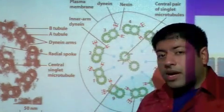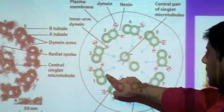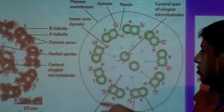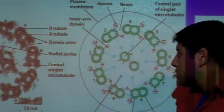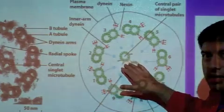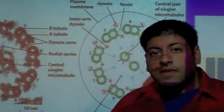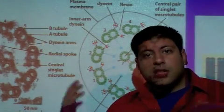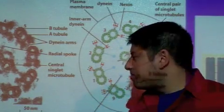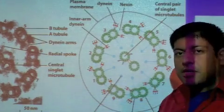Separating the doublets from the central singlets, we have a protein in light blue called the radial spoke. The radial spoke is coming from the doublet to the singlet, so there's space right there. It's a radial spoke because obviously if you looked at this picture, it looks like the radial spoke of a bicycle tire.